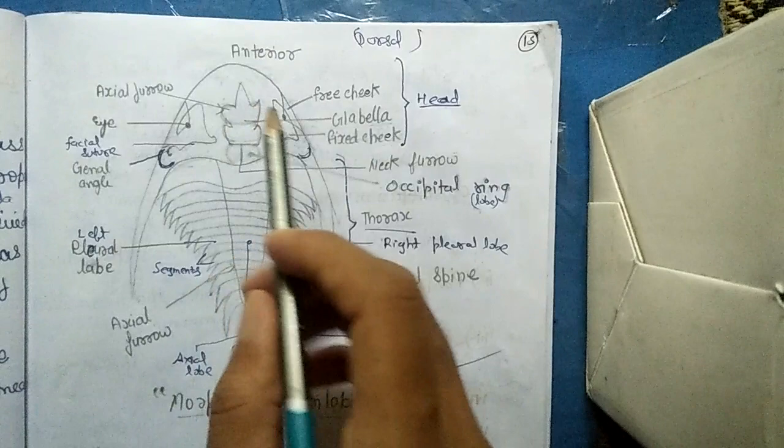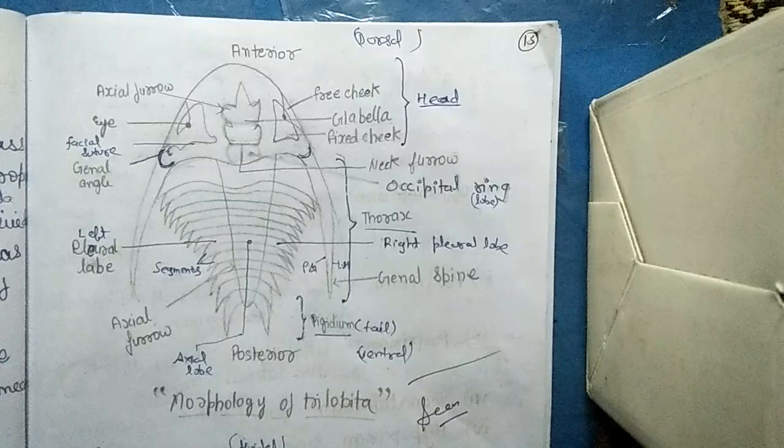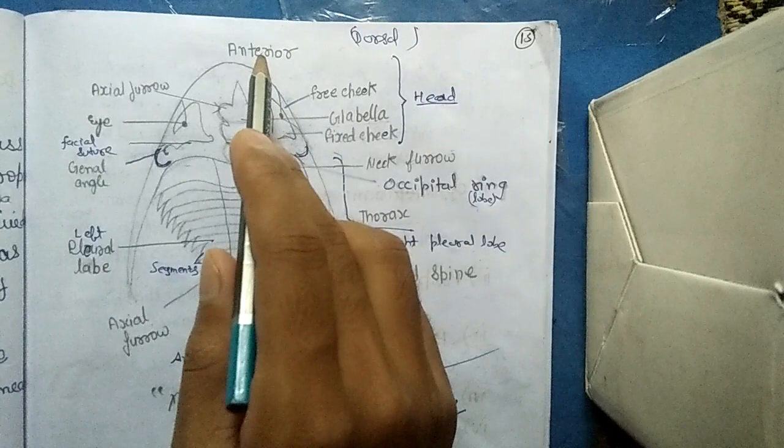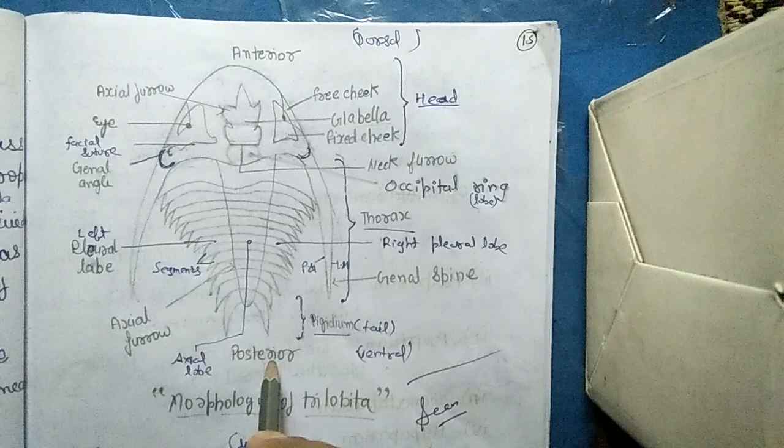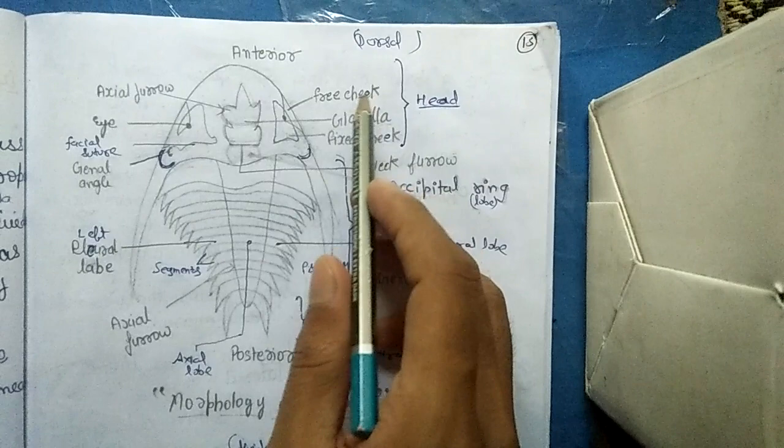This is its anterior portion, the anterior part, that means front part. This is its posterior part. This is dorsal and this is ventral. Dorsal means from upper side and ventral means from lower side.